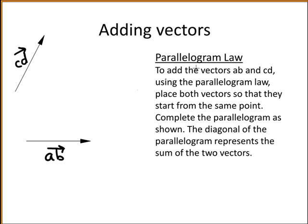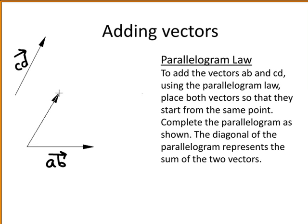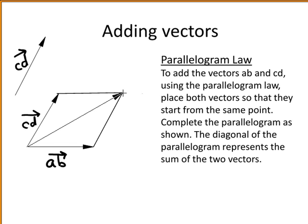Another method of adding the two vectors is to use the parallelogram law. With this method, you want to place both vectors so that they start from the same point — so here we put the vector CD. Then you want to complete the parallelogram like so. Your resultant vector, the sum of the two vectors AB and CD, is the diagonal of your parallelogram. So this is AB plus CD. And you can see from this slide and the previous slide, whichever method you use, you end up with the same resultant vector.